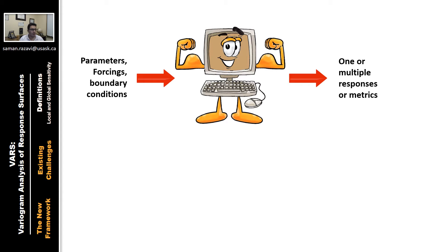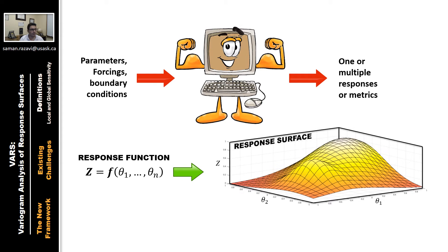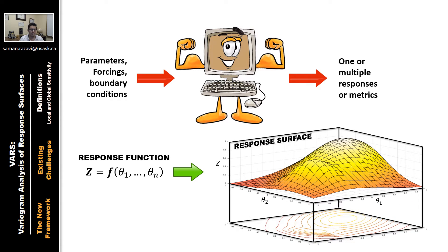In a simple way, the response function of a model can be represented by this simple notation. Z is the model response, for simplicity here a scalar value, which is a function of thetas, model parameters. These model parameters can vary across the parameter space.